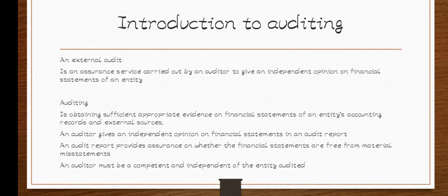Auditing is the process of obtaining sufficient appropriate evidence on financial statements of an entity's accounting records and external sources. Then, an auditor is the person who gives an independent opinion on financial statements in an audit report. After examining everything, the auditor is supposed to write a report — that is when and where they give their opinion.